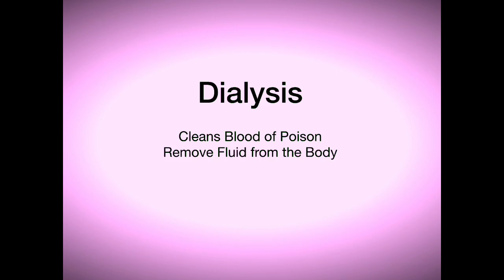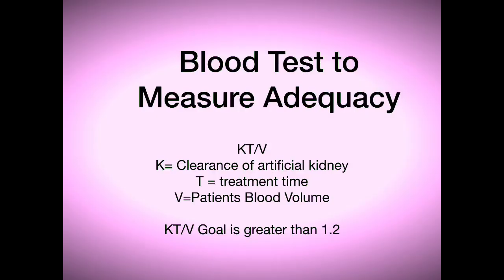So we don't just put patients on the machine and run them for treatment after treatment never measuring how well we're actually cleaning the person's blood. There's a blood calculation that we do monthly and it's called the KT over V.